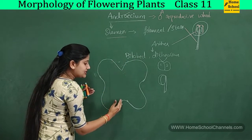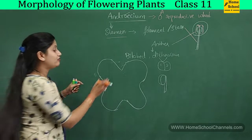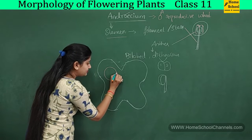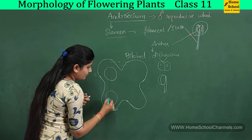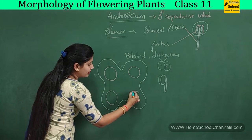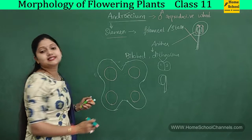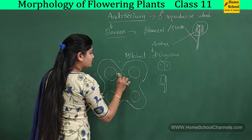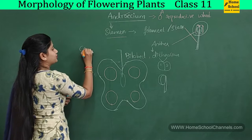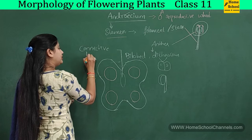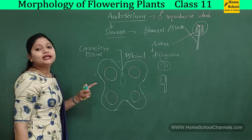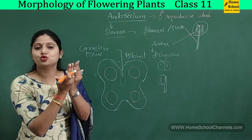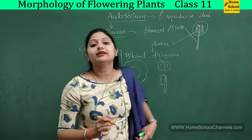In every single theca or lobe, there are two chambers — so we call the anther bilobed. Between the two thecae there is a mass of tissue called connective tissue, which helps the anther properly close and open when required. The mass of cells present inside the chambers are called sporogenous tissues or sporogenous cells.